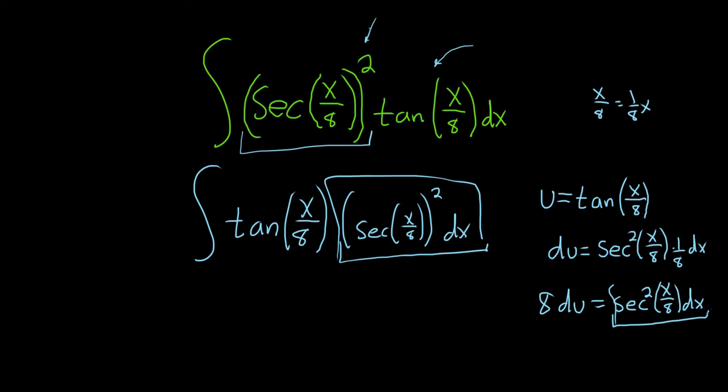These are the same thing, right? So all we do is replace secant squared dx with 8 du. So this will be 8 integral. And then tangent was u. So we have u du.